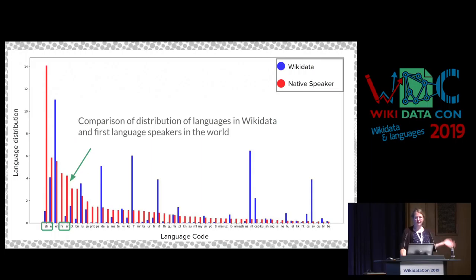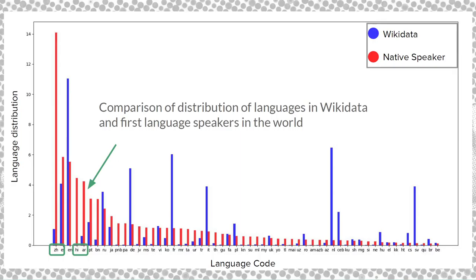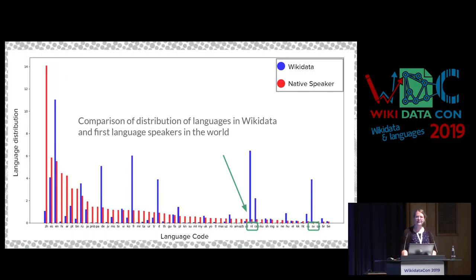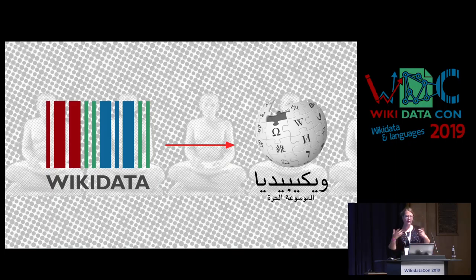We compared Wikidata coverage to native speaker counts, and we can see there are languages widely spoken in the world — like Chinese, Hindi, or Arabic — but with very low coverage in Wikidata. Then the opposite: the Dutch and Swedish communities are super active in Wikidata. That shows that even with a low number of speakers, you can have a big impact if people are very active in communities. But let's also try to equal that graph out in the future.